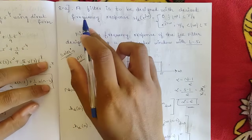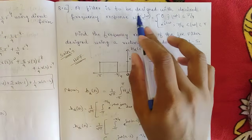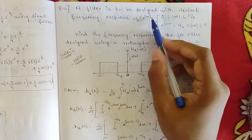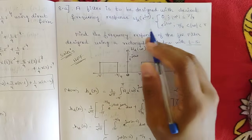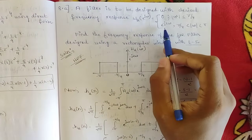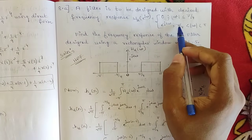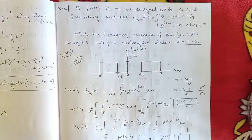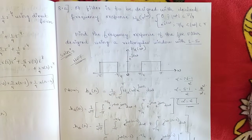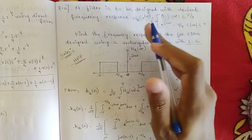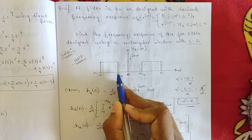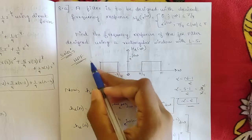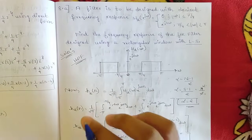This is question 8a. A filter is to be designed with desired frequency response Hd(e^jω): it equals 0 for omega from minus pi/4 to plus pi/4, and e^(-j2ω) for omega from pi/4 to pi. Observing this, the values from minus pi/4 to plus pi/4 are zero, meaning low-frequency components are blocked and high-frequency components are allowed — this is a high-pass filter.